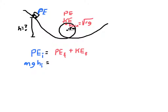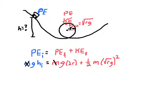Setting up the energy equation: all the initial potential energy mgH_i equals the final potential energy mg(2R) plus the kinetic energy (1/2)mv². The height at the top of the loop is 2R. Substituting in our minimum velocity — square root of Rg — squaring the square root cancels, giving (1/2)Rg. Notice mass appears in every term, so it cancels out.